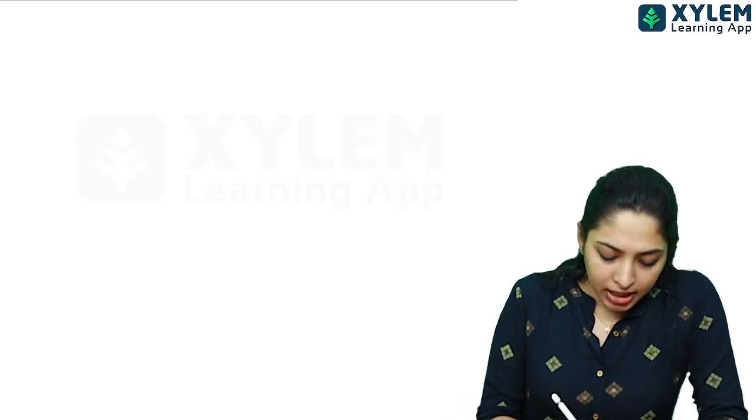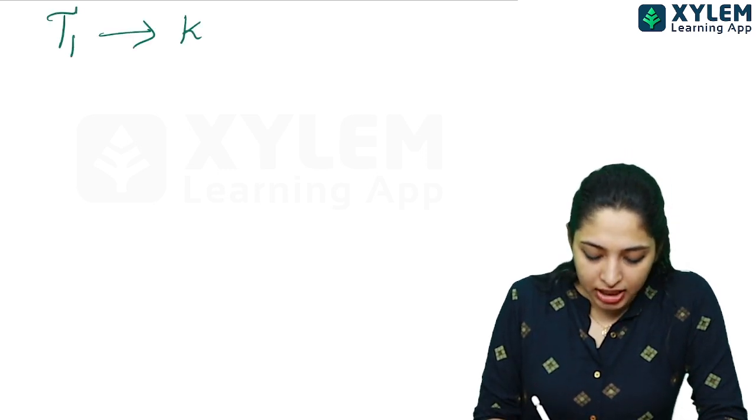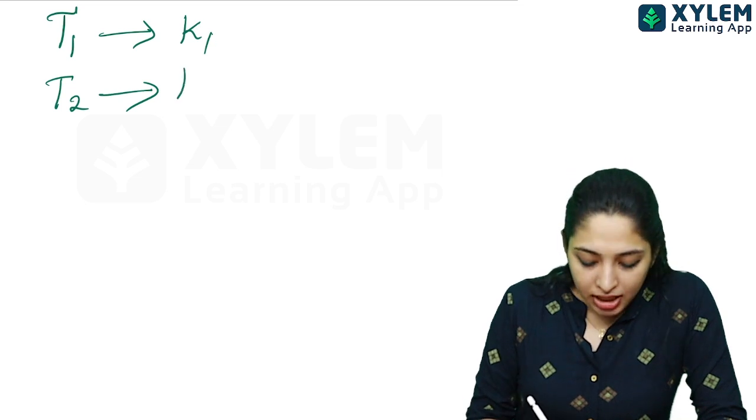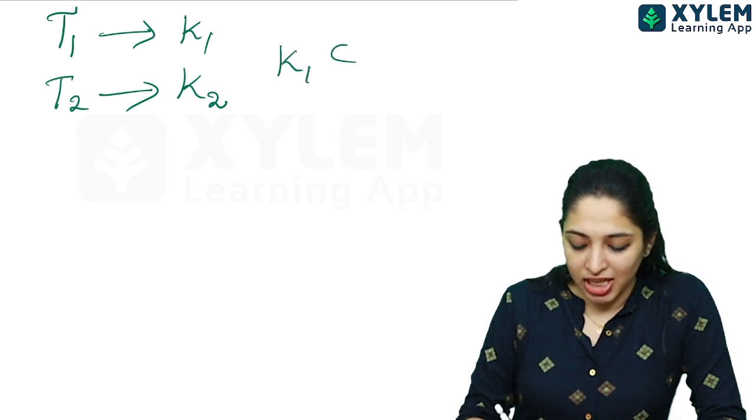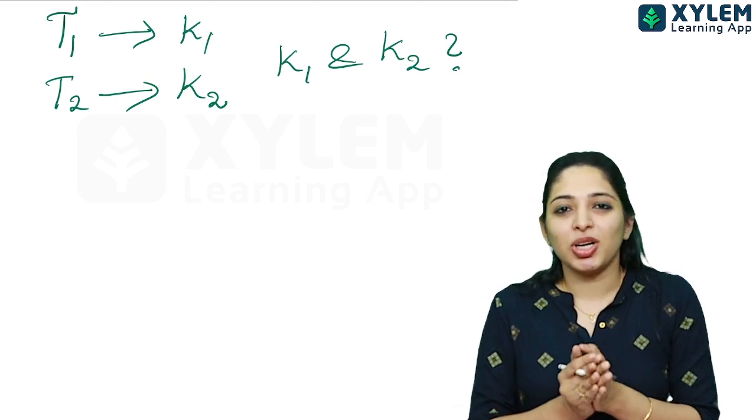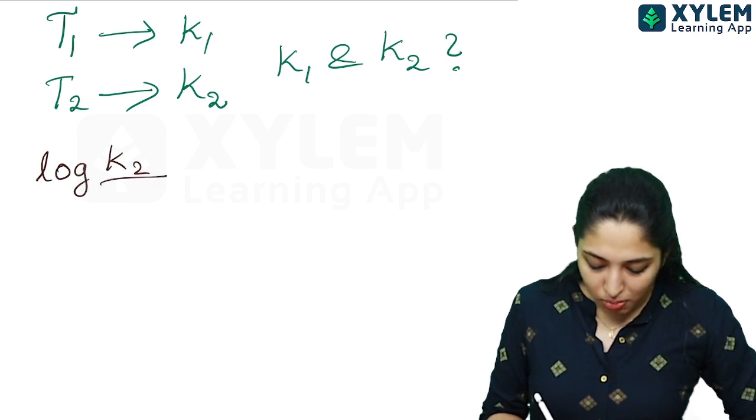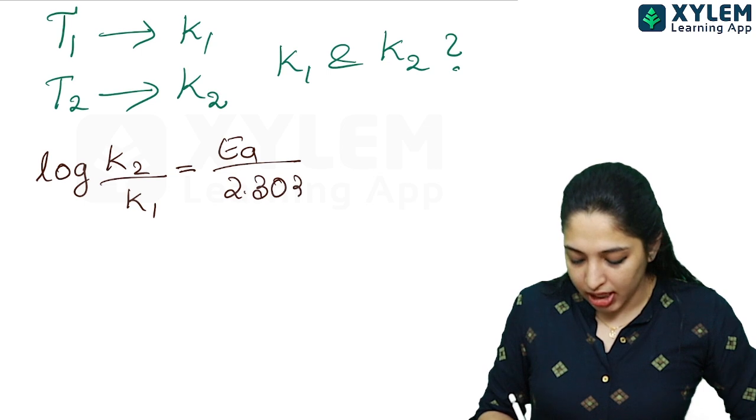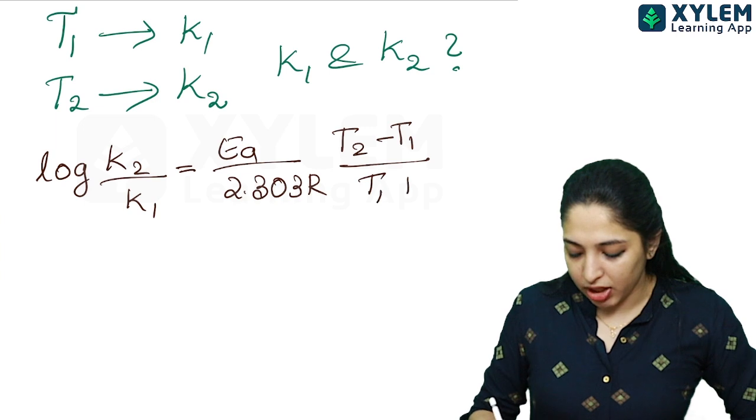For the same reaction at T1 temperature, the rate constant is k1. For that reaction at T2 temperature, the rate constant is k2. What is the relation between k1 and k2? The relation is: log k2 by k1 equal to Ea by 2.303 R times T2 minus T1 by T1 times T2.